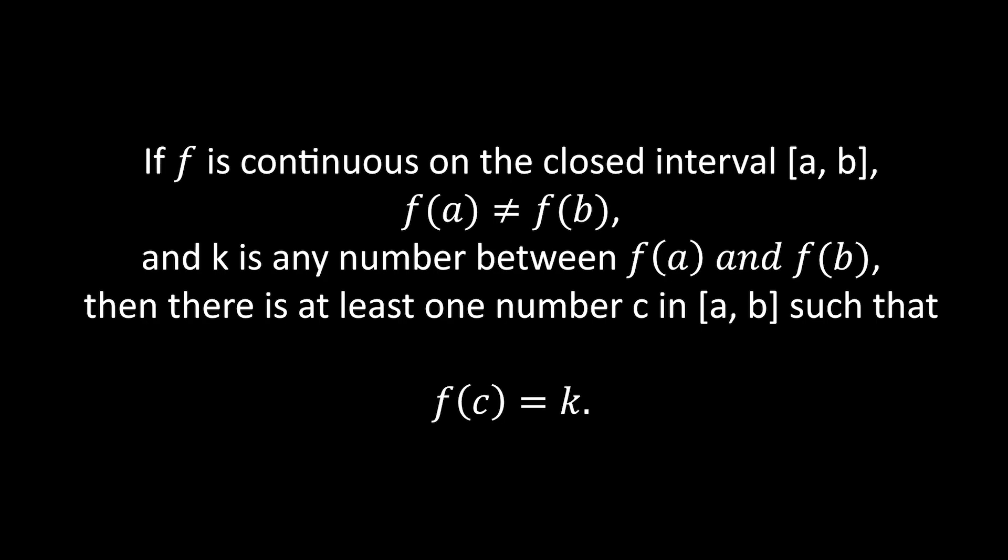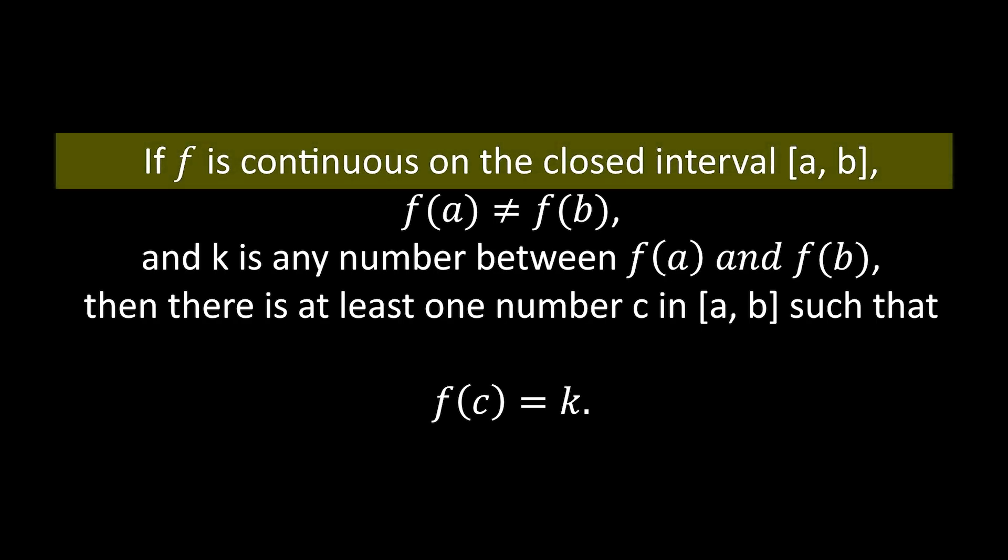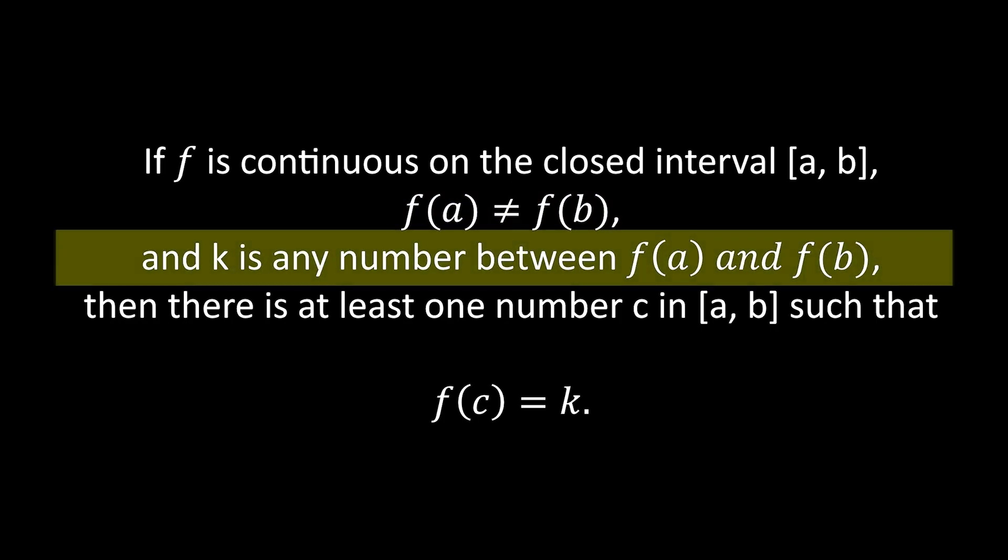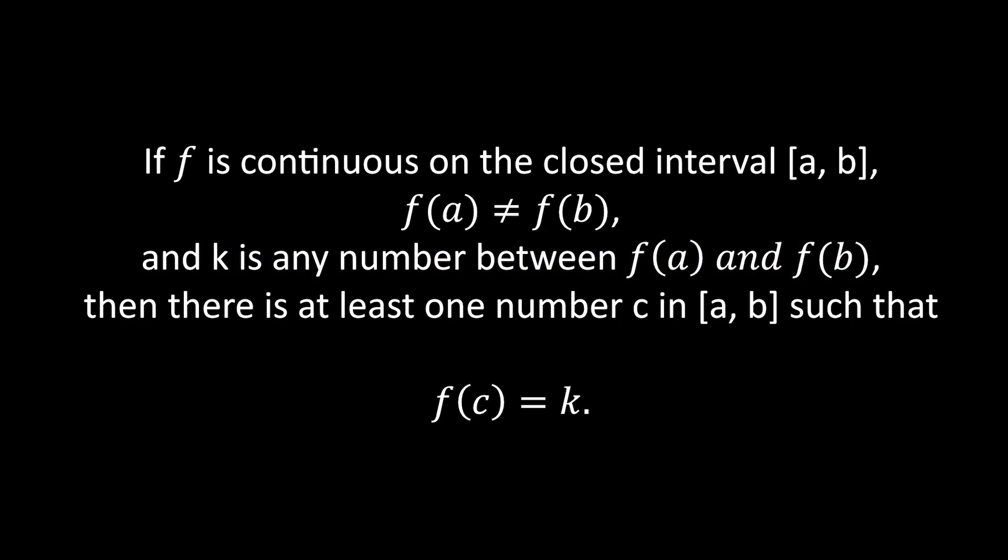The crucial conditions here are that the function f of x must be continuous on the interval between a and b, and the heights at the beginning and the end must be different. In other words, the escalator must move continuously and not have the same height at both ends. Additionally, the value k can represent the height of some floor between f of a and f of b.